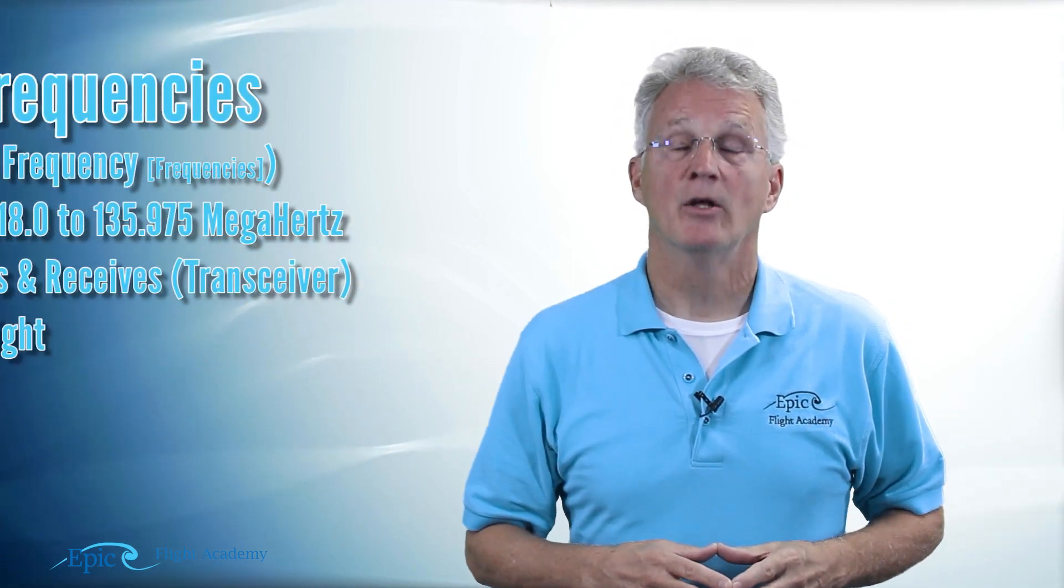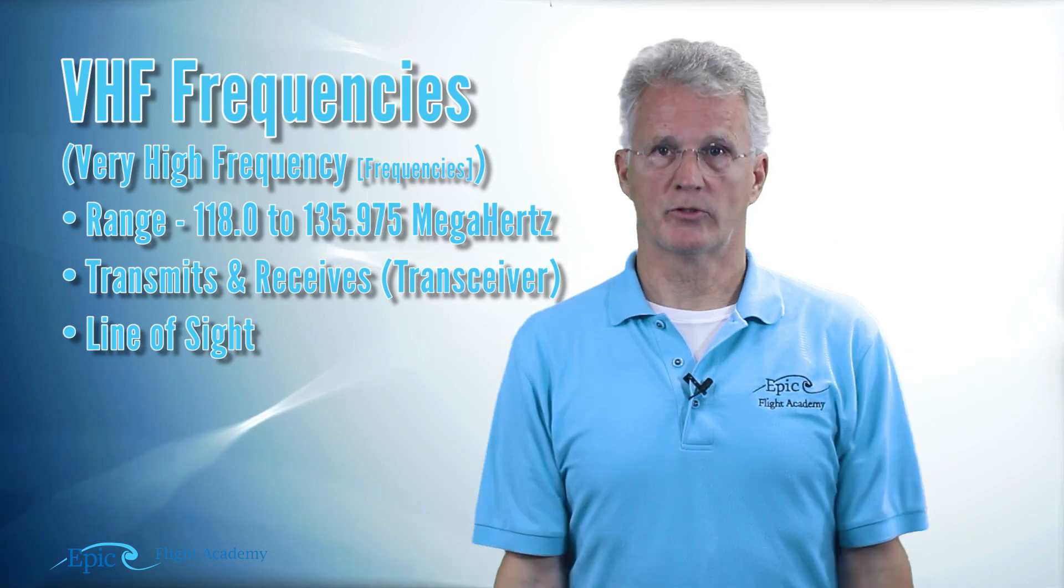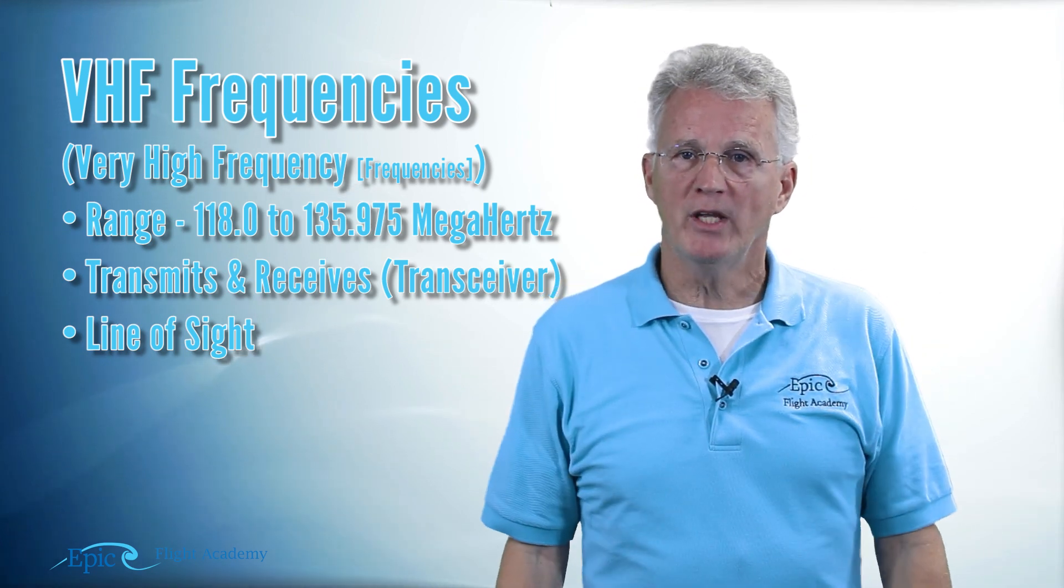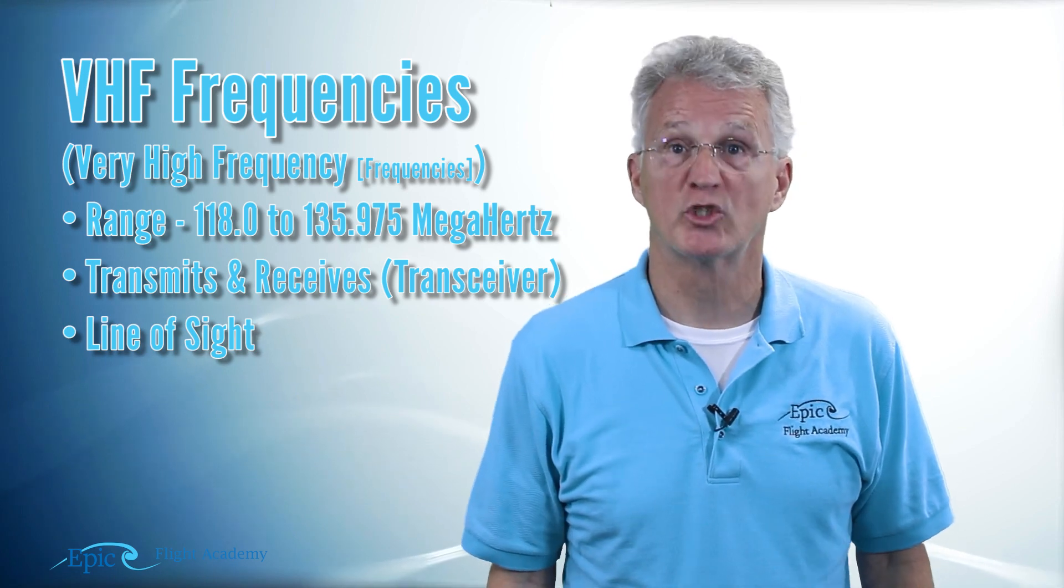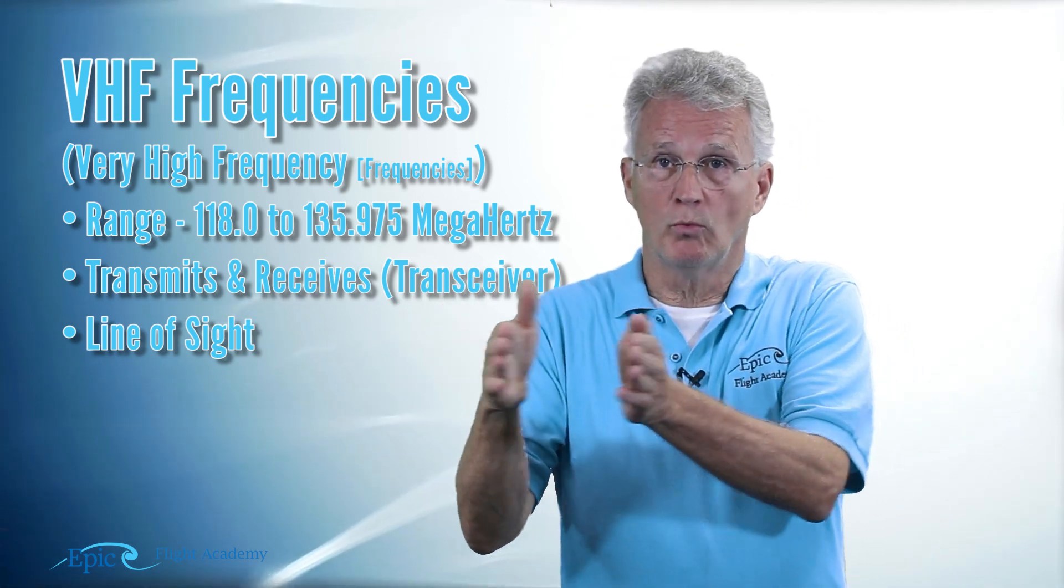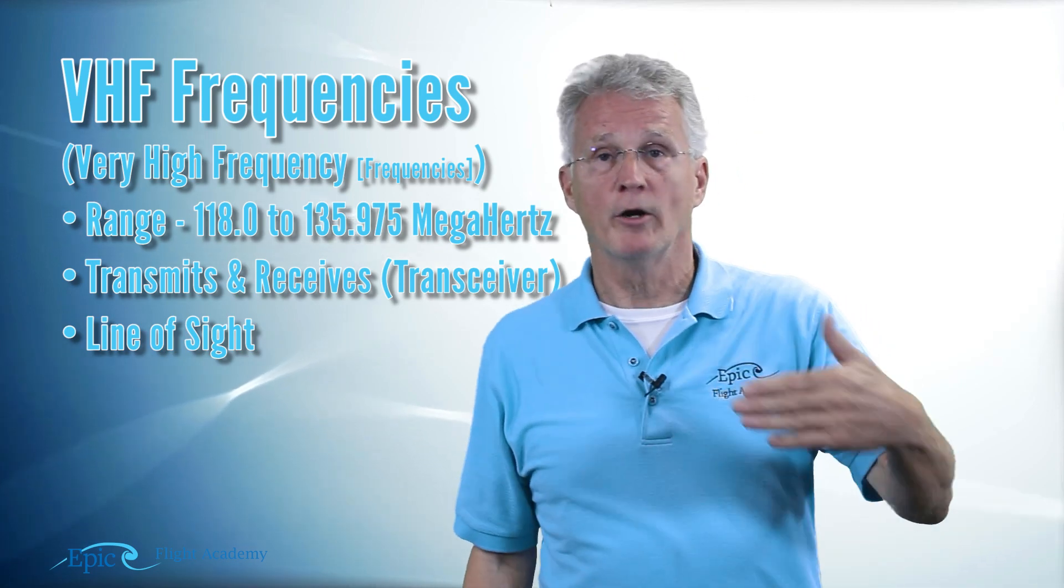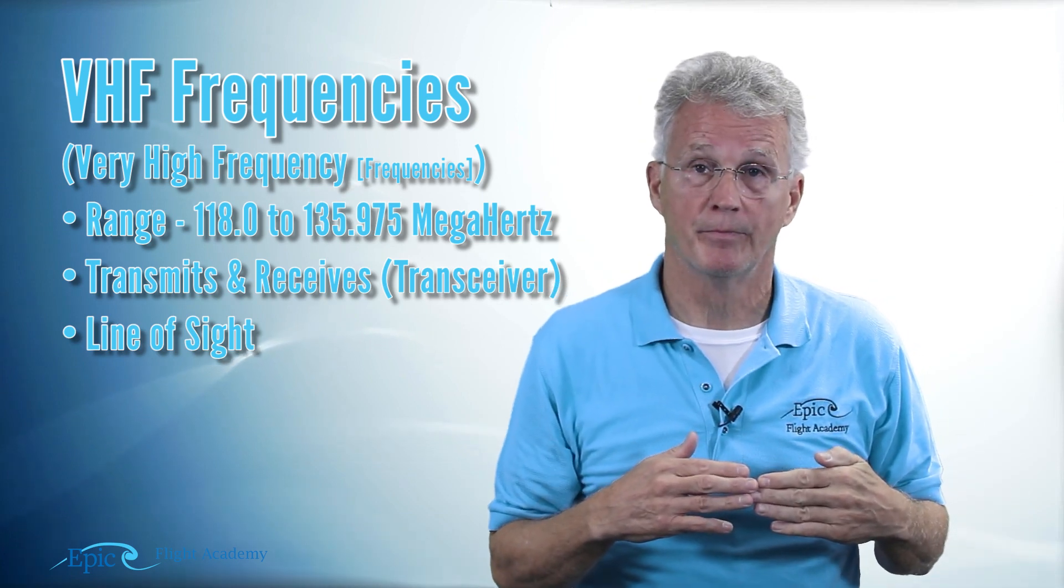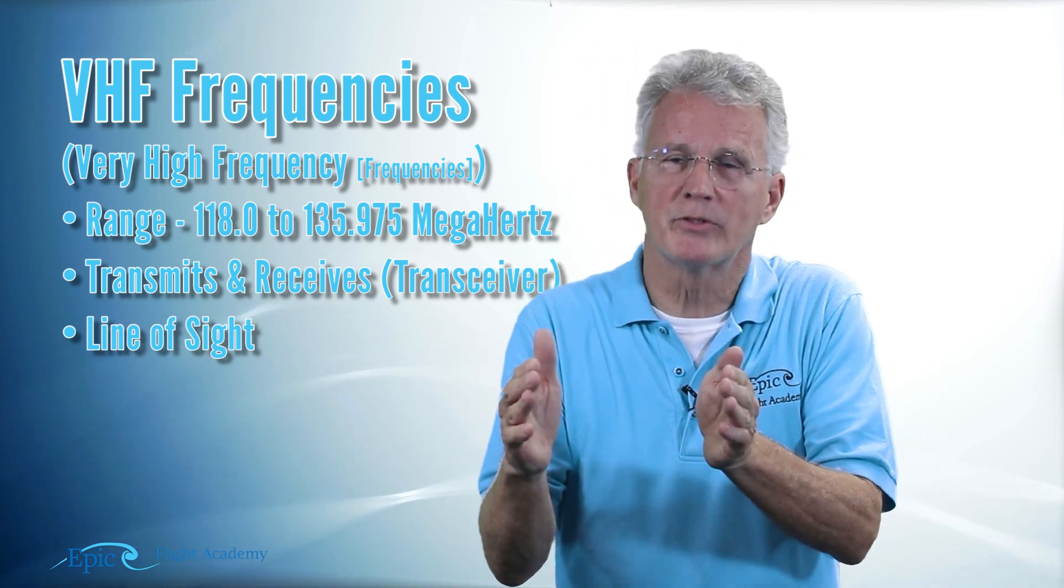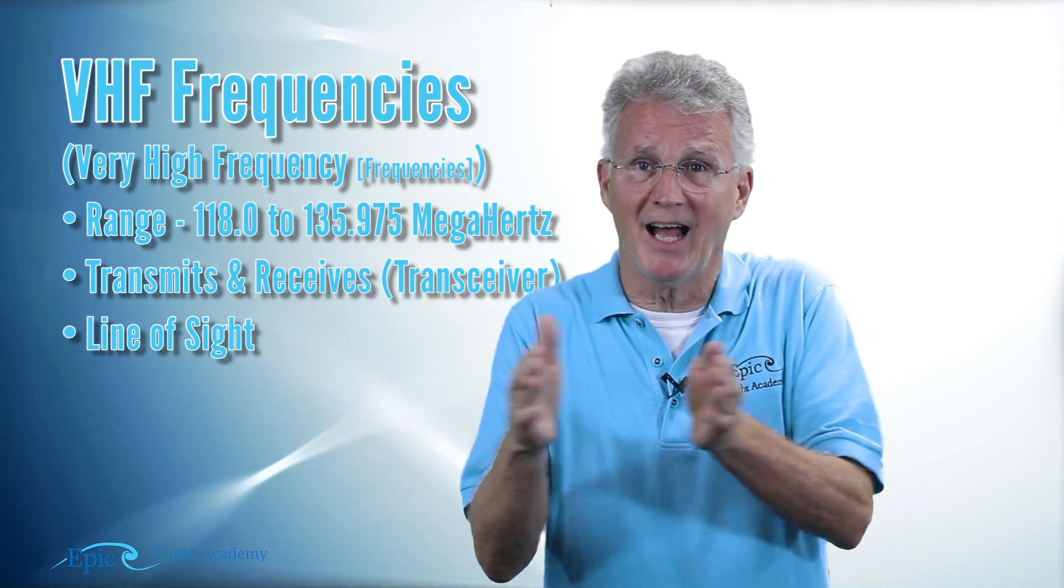So a little bit more information now on communications. We are communicating on VHF frequencies. VHF, what's that? Very high frequency. We're in a bandwidth range that's known as VHF. Now VHF goes from 118.0 megahertz to 135.975 megahertz. That is the bandwidth range of VHF. The radio that you have in your airplane both transmits and receives. If it does that, it is called a transceiver.